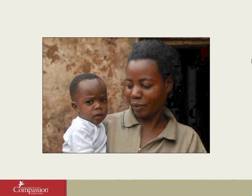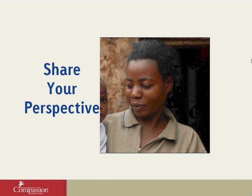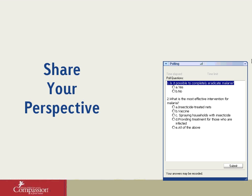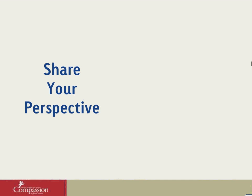Maybe now's the time to look at our second set of polling questions. The first question is: Is it possible to completely eradicate malaria? A for yes and B for no. The second question is: What is the most effective intervention for malaria? Is it A, insecticide-treated nets? B, a vaccine? C, spraying households with insecticide? D, providing treatment for those who are infected? Or E, all of the above? Please make your selections and be sure to hit submit.